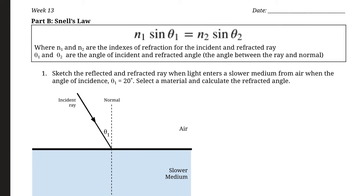By now you should understand that light moves at different speeds depending on the material it's traveling in, and you should understand some of the reasons for why that is. The effect this has is that when light enters a medium with a different speed, it bends — we call that refraction. This happens when you put a pencil in water and it looks bent, or how glasses and lenses work — they refract the light.